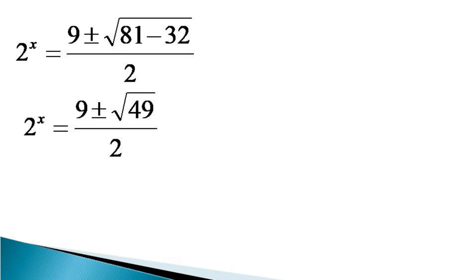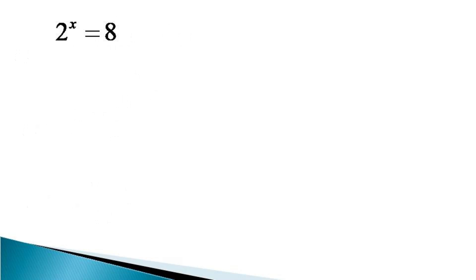This gives us 2 raised to the power x equal to (9 plus or minus 7) divided by 2, yielding two values: 2 raised to the power x is equal to 8, and 2 raised to the power x is equal to 1.